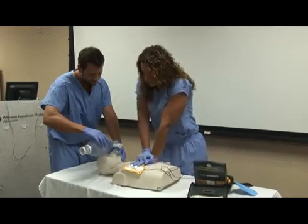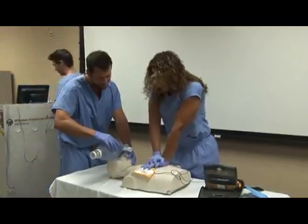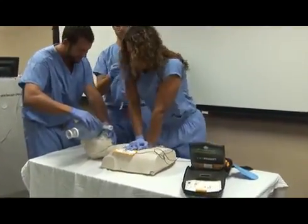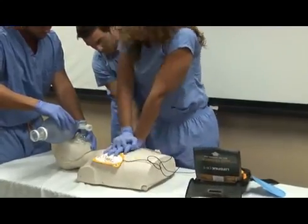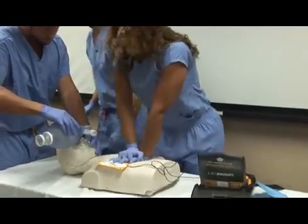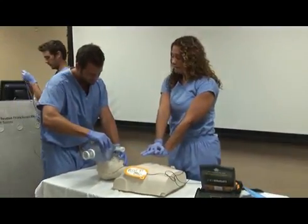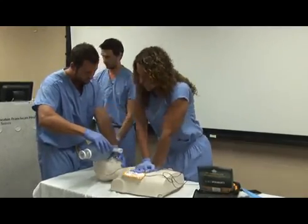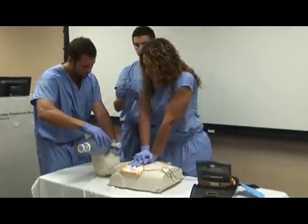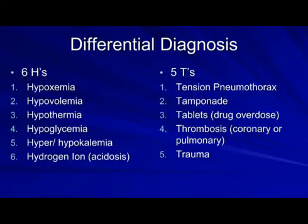C is for circulation, which involves attaching EKG leads, establishing IO or IV access, and administering drugs to manage cardiac dysrhythmia. D is for differential diagnosis, which involves searching for and treating the H's and T's. Although these are listed in progressive order, oftentimes the team will be doing multiple steps simultaneously.